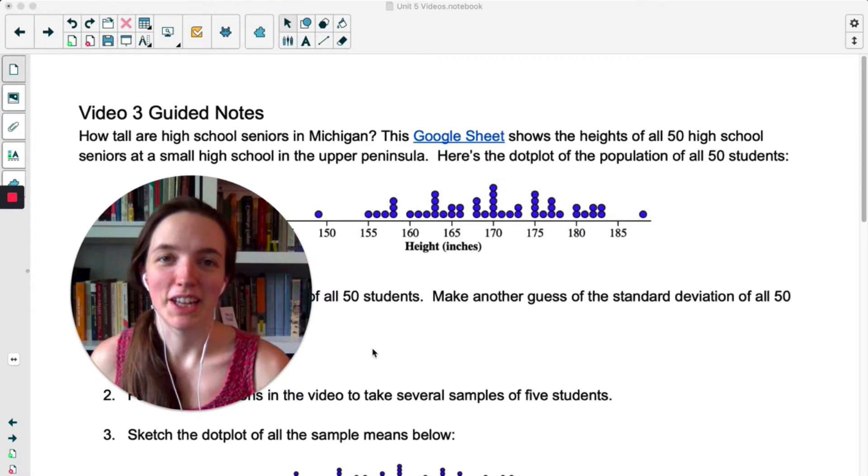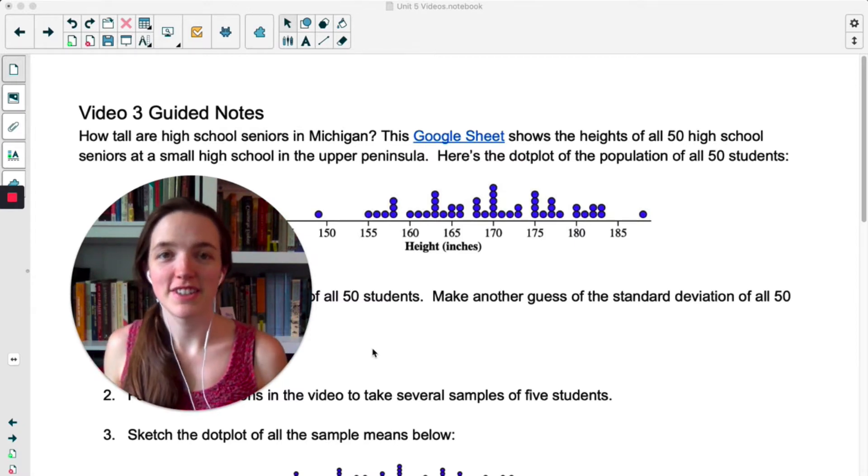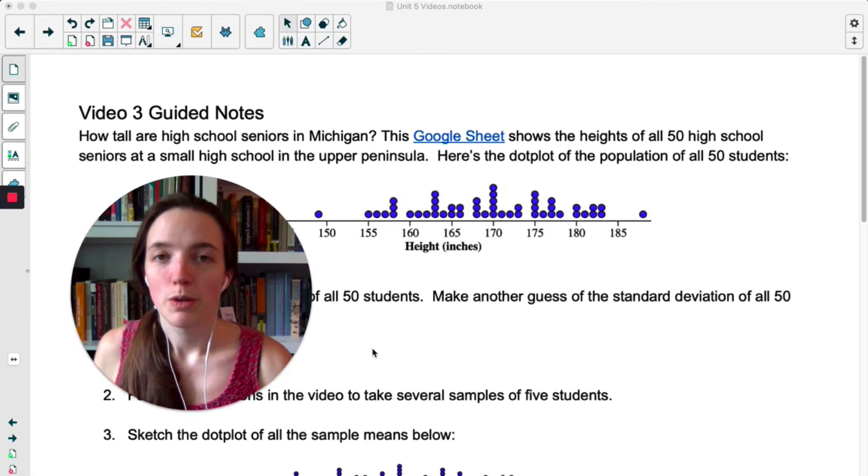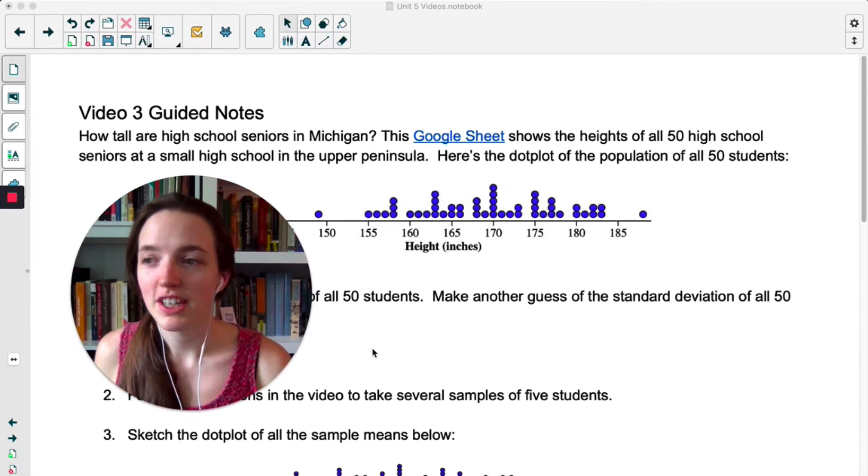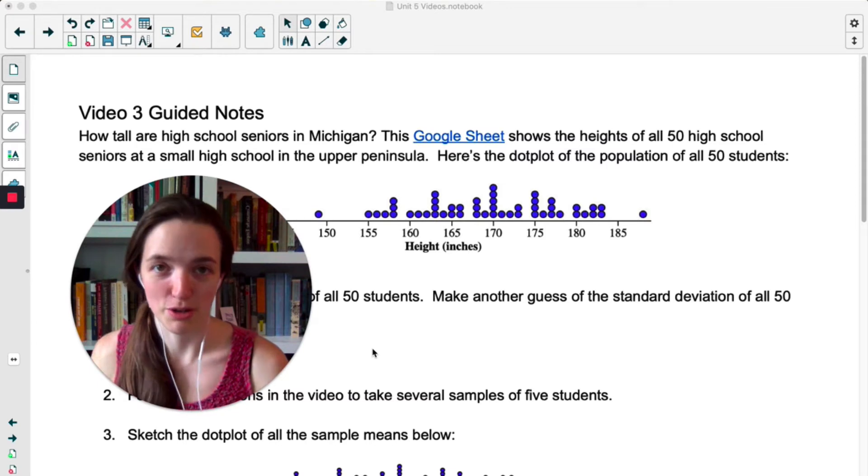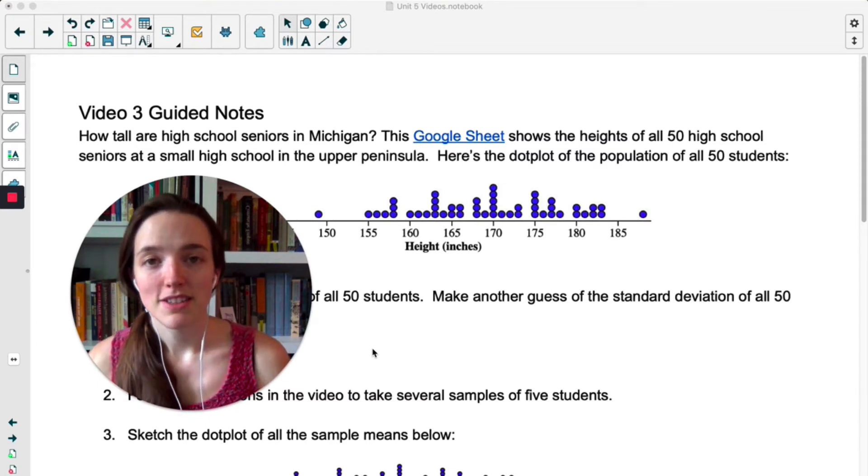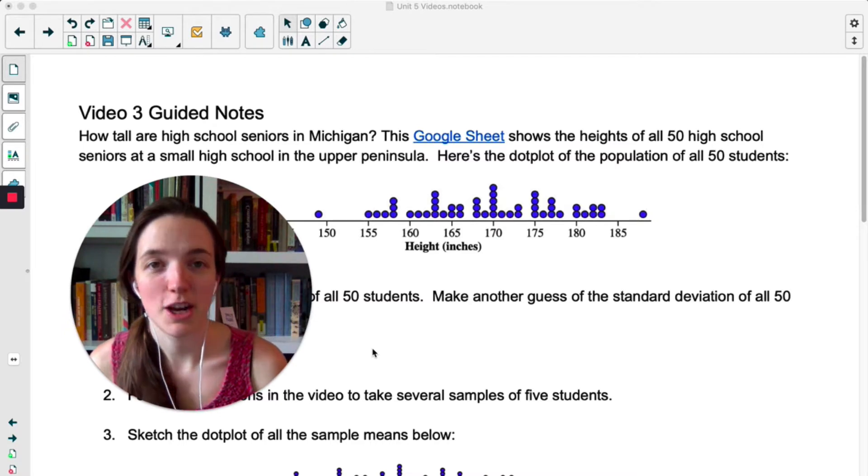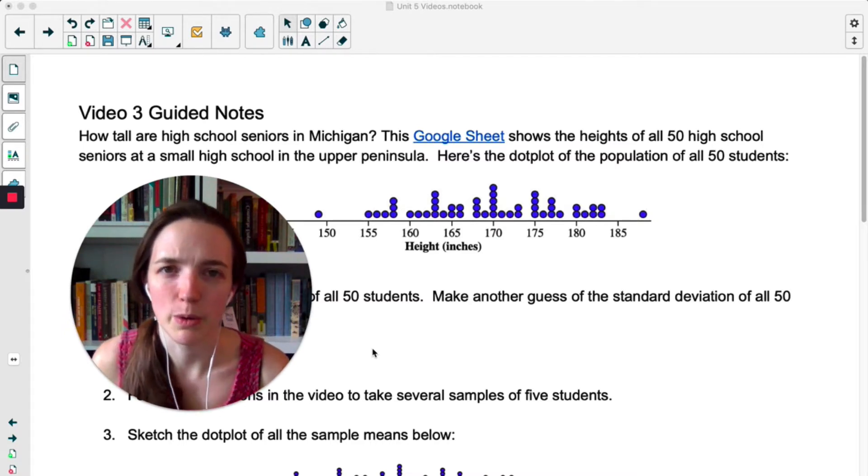In the previous video, we were looking at the proportion of orange Reese's pieces. We're going to shift gears and instead of thinking about proportions in this video, we're going to think about means. When we're dealing with proportions, we're usually looking at questions where there's a categorical variable, such as do you watch American Idol? Yes or no? When we're thinking about means, the question is usually asked so that we get a quantitative answer, such as how many American Idol winners can you name? I use that example way back in unit one.